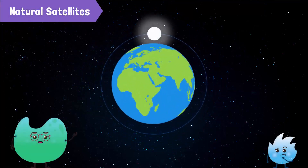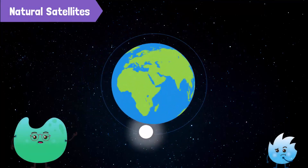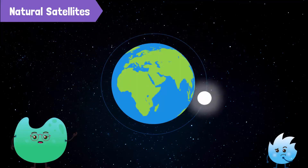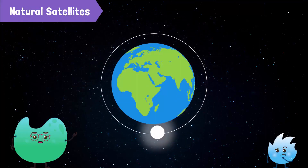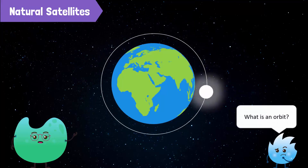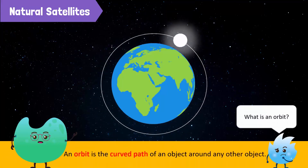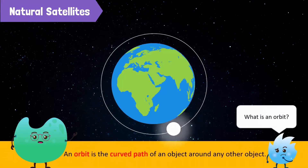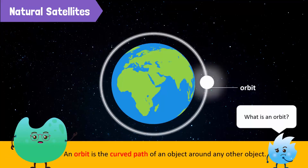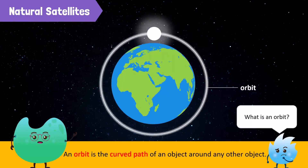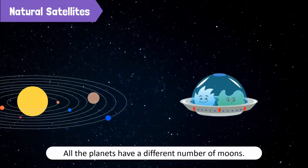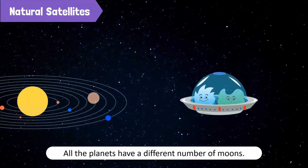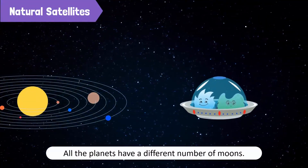The Earth's moon is also a natural satellite. It revolves in its fixed orbit around the Earth. What is an orbit? An orbit is a curved path of an object around another object. This is the orbit of the moon around the Earth. Do you know that all the planets have a different number of moons?